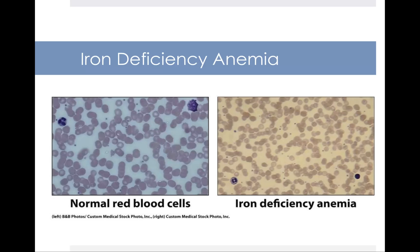With normal blood cells, what you see on the left, they're good sized and dark red. On the right hand side you see iron deficiency anemia, where the cells are smaller in size and they're also paler in color, indicating that there's not the capacity to carry the oxygen to the cells that you need.